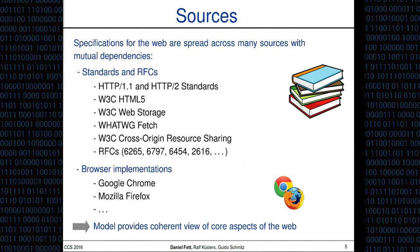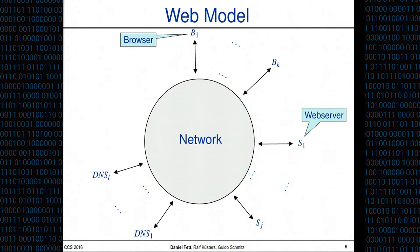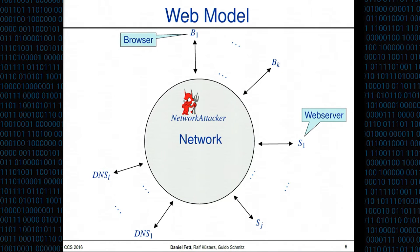What does our model look like? It's a Dolev-Yao style model adapted to the specific needs of the web. We have a network through which different components communicate: web browsers, web servers, DNS servers, and attackers. We have two types of attackers: the web attacker, who can send and receive messages like any other process, and the network attacker, who controls the whole network, can intercept messages not intended for it, and can spoof sender messages — something the web attacker cannot do.